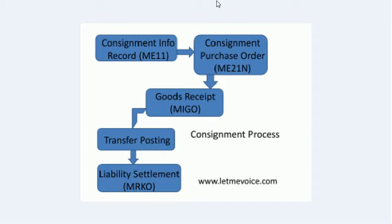Vendor consignment process is treated as a special procurement in SAP. When a company requires a certain product with a specific quantity, a consignment purchase order is raised, and we withdraw material from vendor consignment stock for use in production, sales, or internal consumption. Inventory gets transferred into the books of the company after removing it from consignment stock. Afterwards, we settle the liability for the withdrawn material via transaction code MRKO.